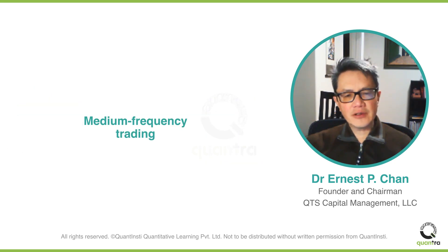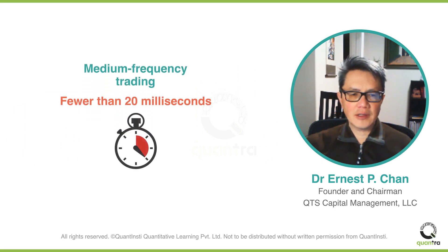The medium-frequency trader generates trading signals and executes them in a span of fewer than 20 milliseconds. In comparison, HFT — short for high-frequency trading — trades in the order of nanoseconds. However, MFT does not need expensive hardware, which is an advantage over HFT.